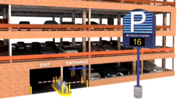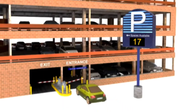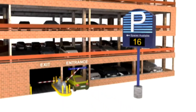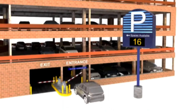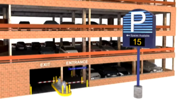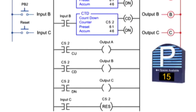Pairing a CTU and CTD in a counting sequence using the same counter file is demonstrated in a parking garage application. As vehicles enter the parking garage, PB1 is pressed to open the gate. The CTU instruction increments by one and the visual display is updated.